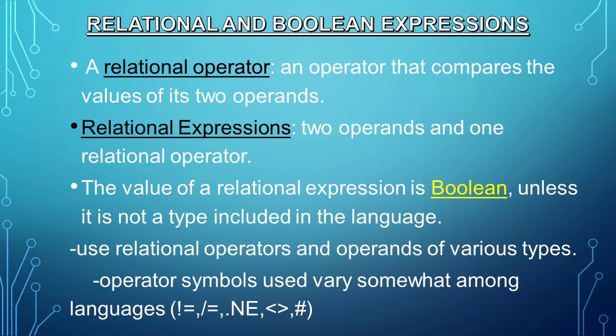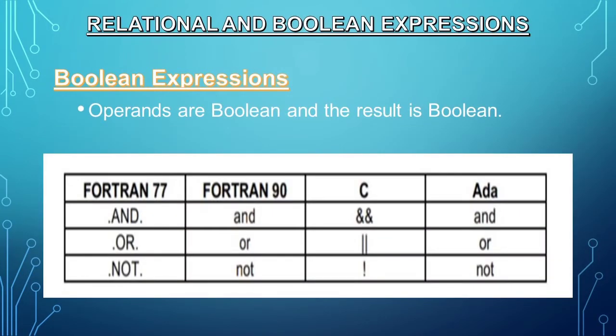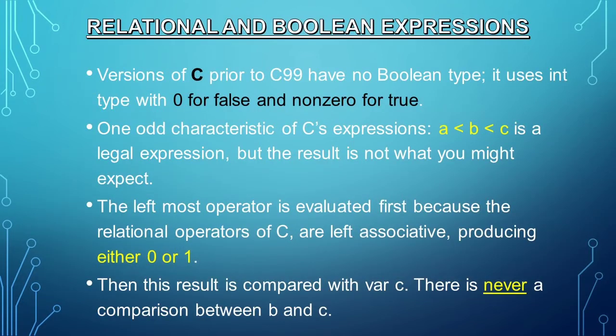Relational and Boolean expressions: a relational operator compares the values of its two operands. Relational expressions have two operands and one relational operator. The value of a relational expression is Boolean, unless Boolean is not a type included in the language. The syntax of relational operators varies among languages. In Boolean expressions, operands are Boolean and the result is Boolean. Versions of C prior to C99 use integer type with zero for false and non-zero for true, since C has no Boolean type. An odd characteristic of C's expressions is the legal expression A < B < C. Although legal, the result is not what you might expect—the leftmost operator is evaluated first due to left associativity, producing either zero or one, and this result is then compared with C. There is never a comparison between B and C.